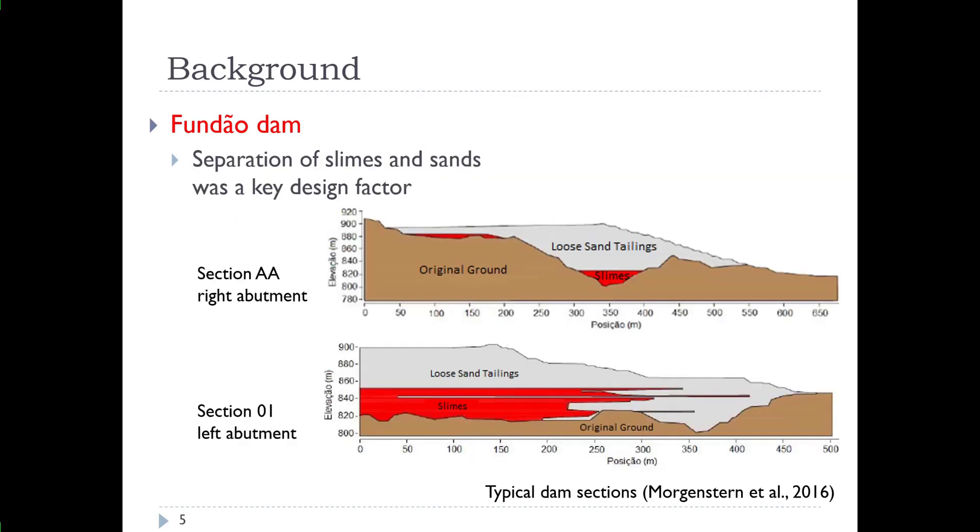Cross-section 01, which goes along the right-hand side if you're looking upstream towards the dam, and AA, which is on the left side. So if we pull out those two cross-sections, we'll look downstream on the earth dam. Section AA on the right abutment looking downstream, and you can see the cross-section there. There's largely loose sand tailings and some slimes material, and you see the location of the original ground. Section 01 on the left abutment where the offset is, you can see the mapped location of the slimes and the loose sand tailings. These are typical cross-sections as presented for those particular locations and presented originally by Morgenstern and the expert panel in 2016.